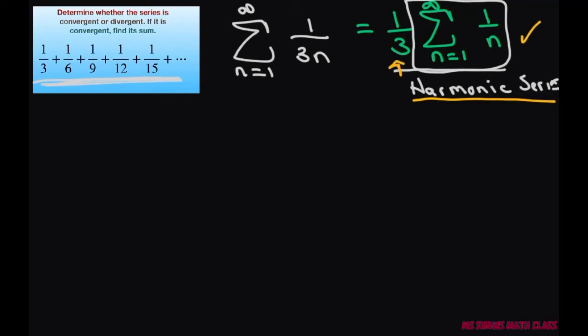For this series, let's consider partial sums: S₂, S₄, S₈, S₁₆. I keep multiplying by 2 — so it's 2 to the 4th, then 2 to the 5th is 32, and so on. We're doing all the ones that are S subscript 2 to the nth power.